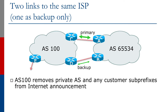In the diagram, AS100 is connected by two paths to AS65534. The link between router A and C is the primary path, and the link between router B and D is the backup path. AS65534 is used for the end site that is multi-homing — this is a private AS. As we learned earlier, there's no need for a public AS number for this type of multi-homing, as the end site only has two external connections to the same upstream provider. AS100 will remove the private AS it hears from its customer and remove any customer sub-prefixes from internet announcements.